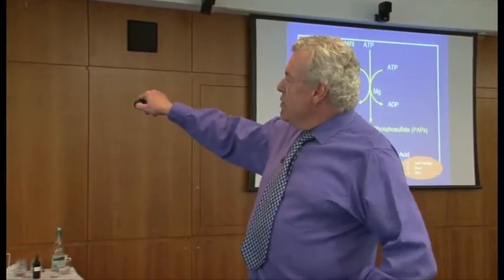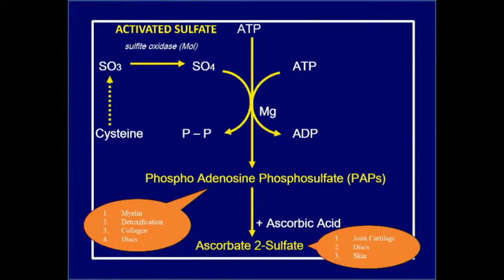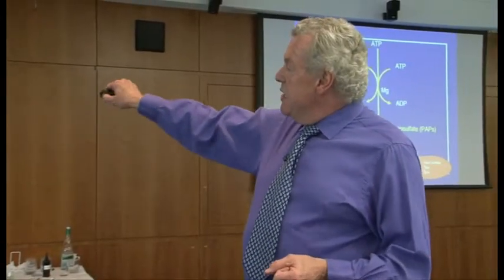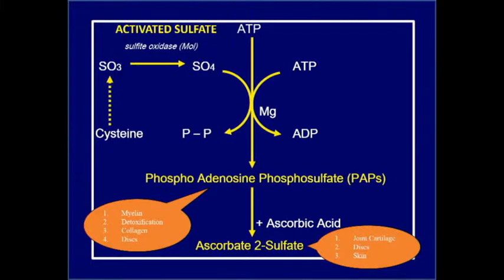In the sulfur pathway, we make sulfur from cysteine to make sulfite, which goes on to make sulfate. This then adds with ATP and phosphate to make phosphoadenosyl phosphosulfate — PAPs — which goes on to make myelin, support detoxification, and make collagen in our discs. This pathway is driven by sulfite oxidase — an oxidase enzyme that oxidizes SO3 (sulfite) to add an oxygen, making SO4 (sulfate).